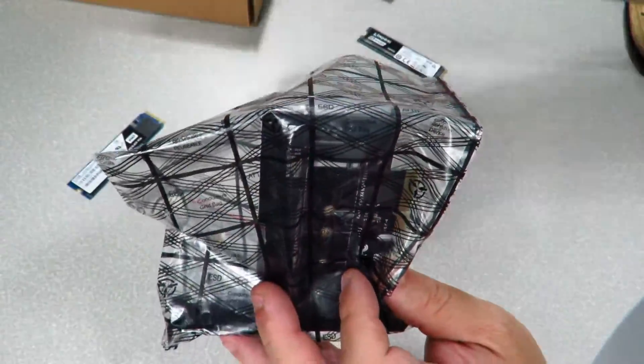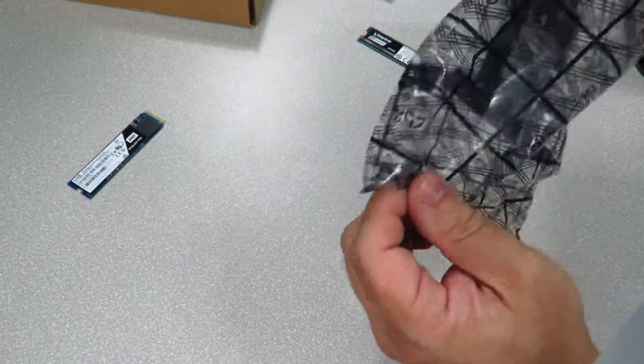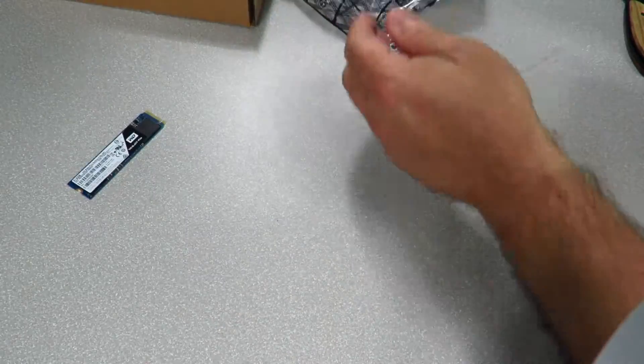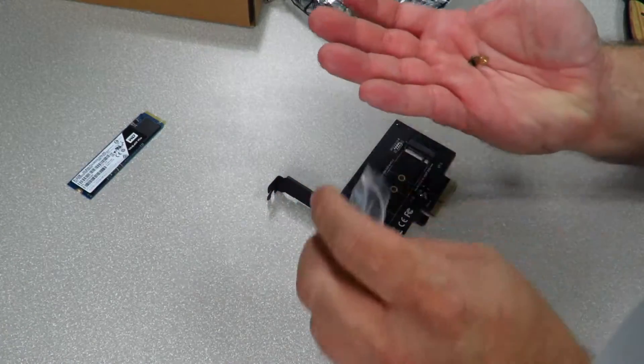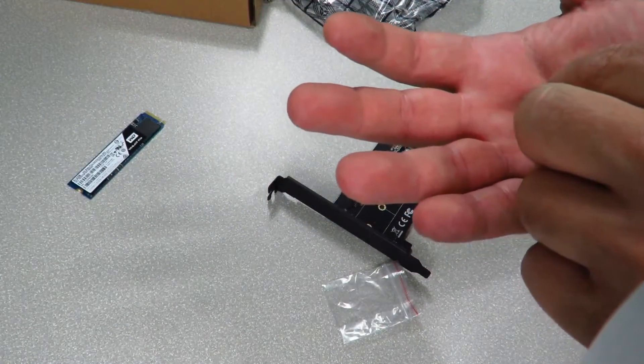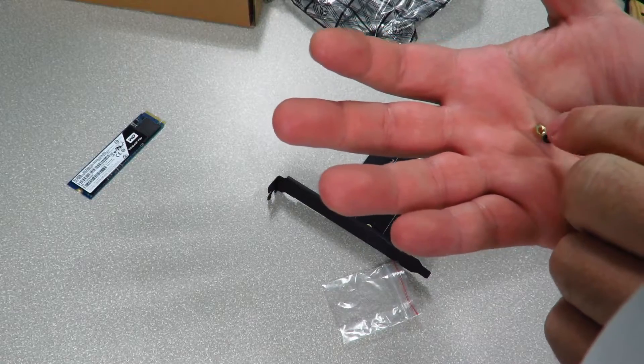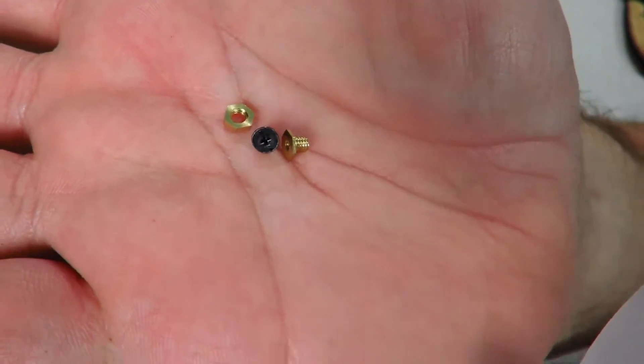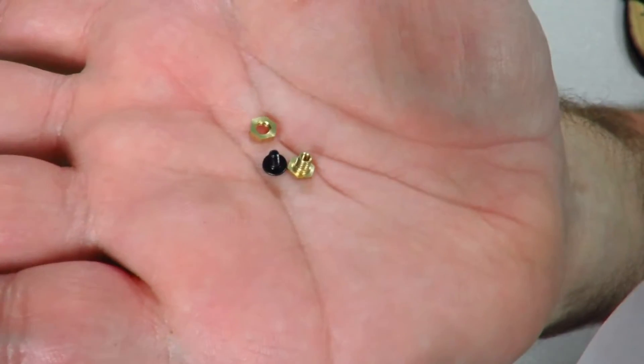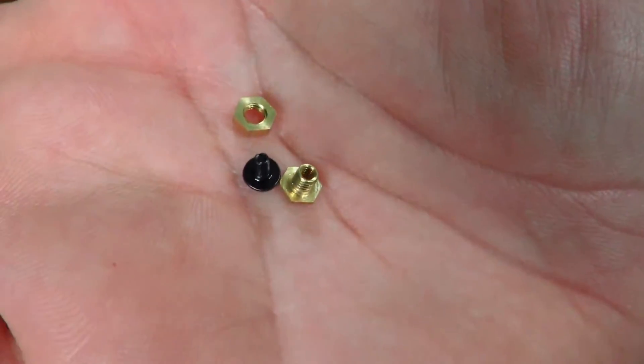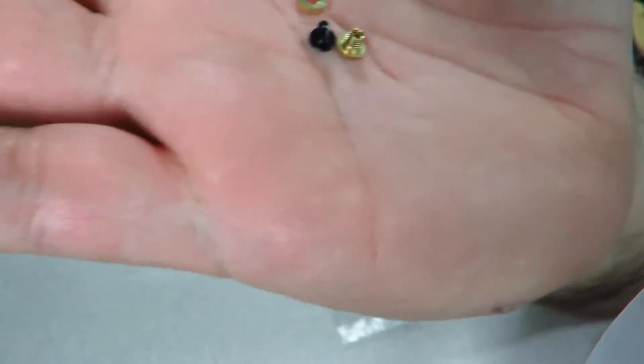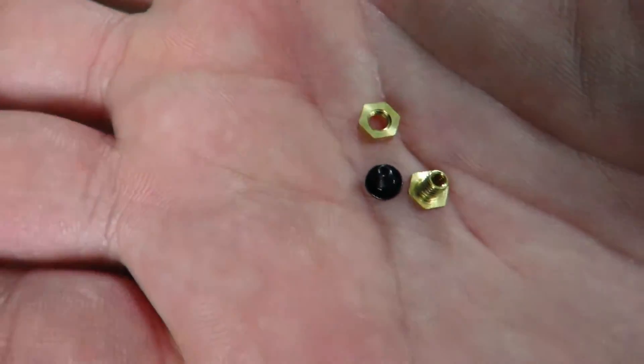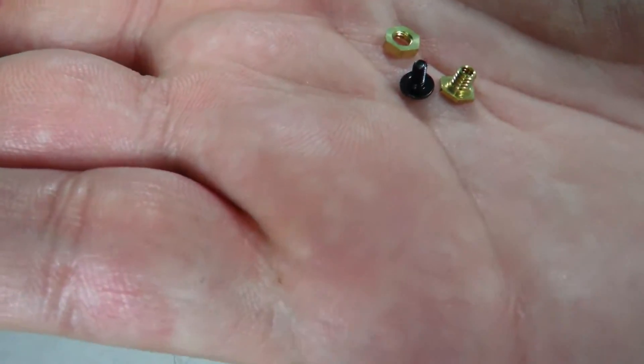They have two screws and the nut. You can see a little bit closer - there's a gold and a black screw and then a nut. They are different size screws, so make sure you pay attention to which one you're using.